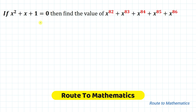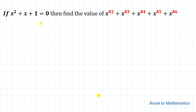Hello everyone, welcome to Root 2 Mathematics. In this video we are going to solve an interesting algebraic problem. We have given: if x squared plus x plus 1 equals 0, then find the value of x to the power 82 plus x to the power 83 plus x to the power 84 plus x to the power 85 plus x to the power 86.